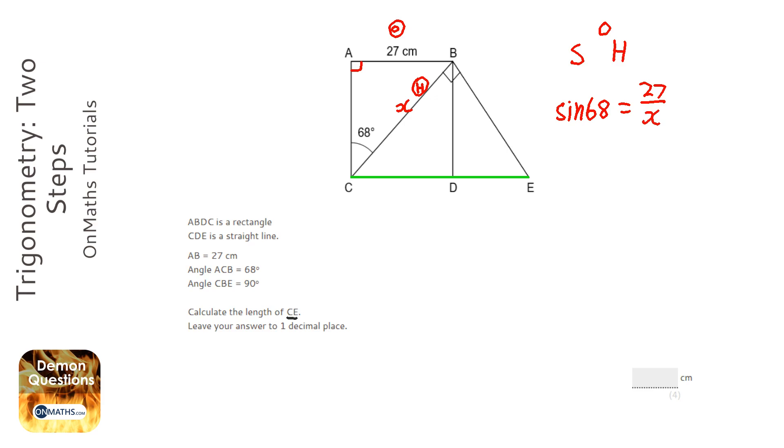And so if I do that on the calculator, 27 over sine 68, that gives me 29.1204.